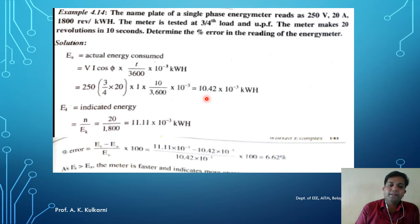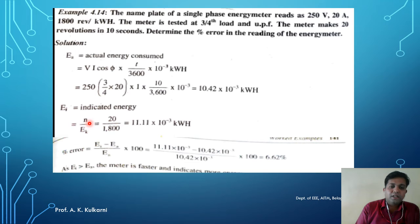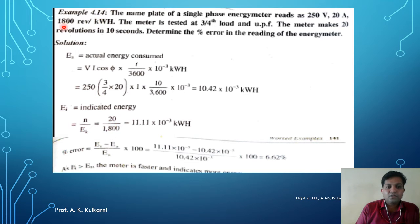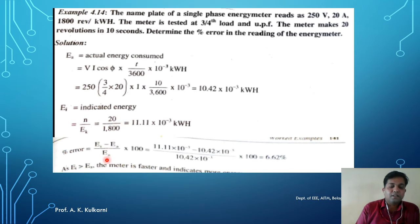Now let us find the indicated energy. The indicated energy equals the number of revolutions divided by the energy meter constant. The meter makes 20 revolutions, and the energy meter constant is 1800 revolutions per kilowatt hour. So indicated energy = 20/1800 kilowatt hours. After substituting in the percentage error formula, the error comes out to approximately 6.62%.